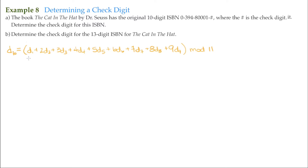Placing in the digits: 0, then 2 times 3 is 6, then 3 times 9 is 27, then 4 times 4 is 16, then 5 times 8 is 40, and then we have three zeros — six times zero, seven times zero, and eight times zero — and finally nine times one is 9.